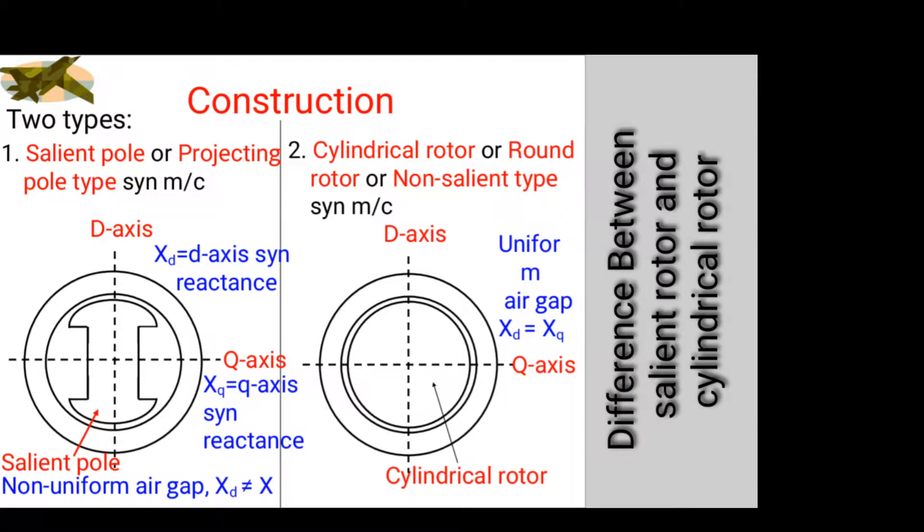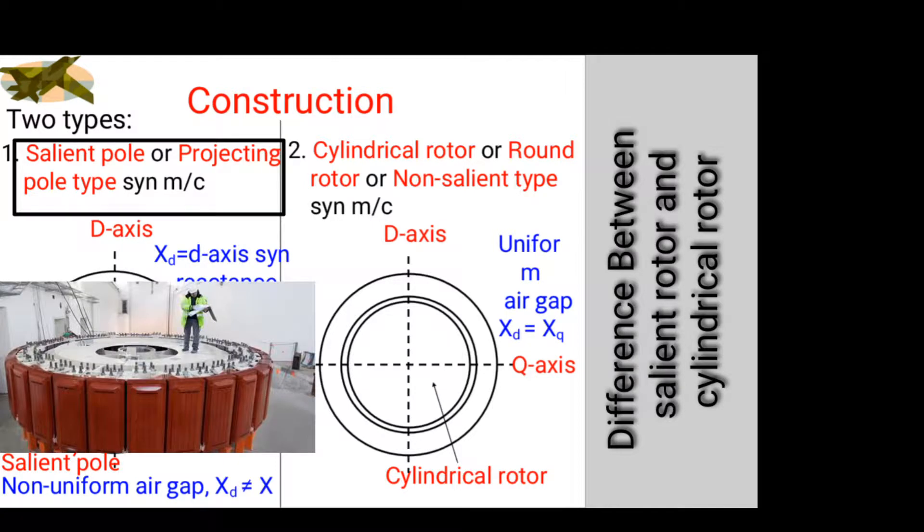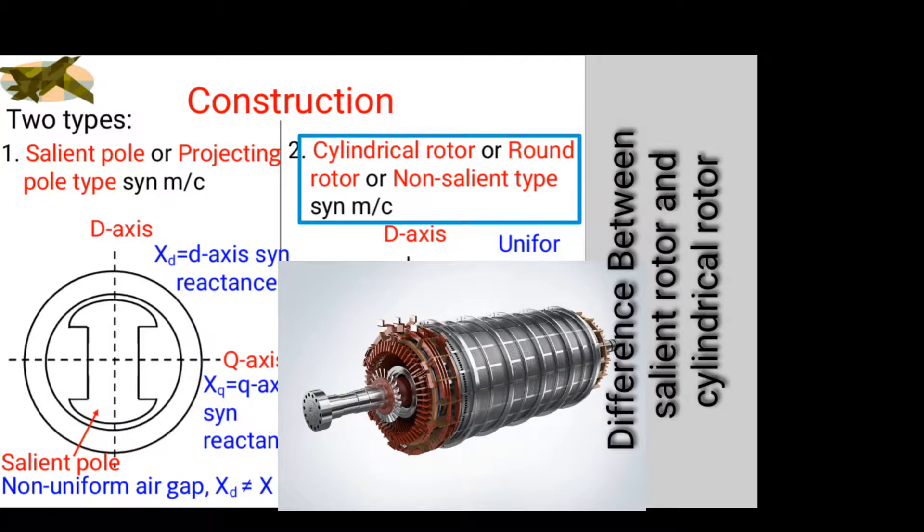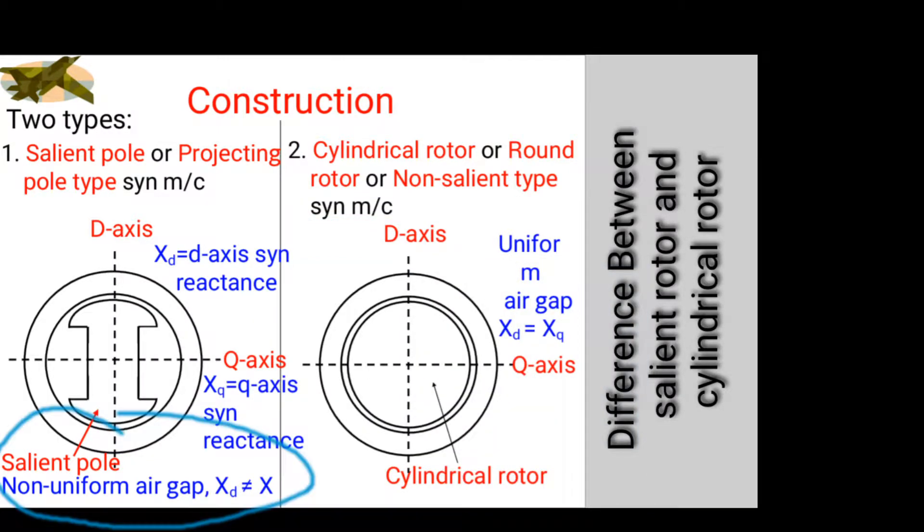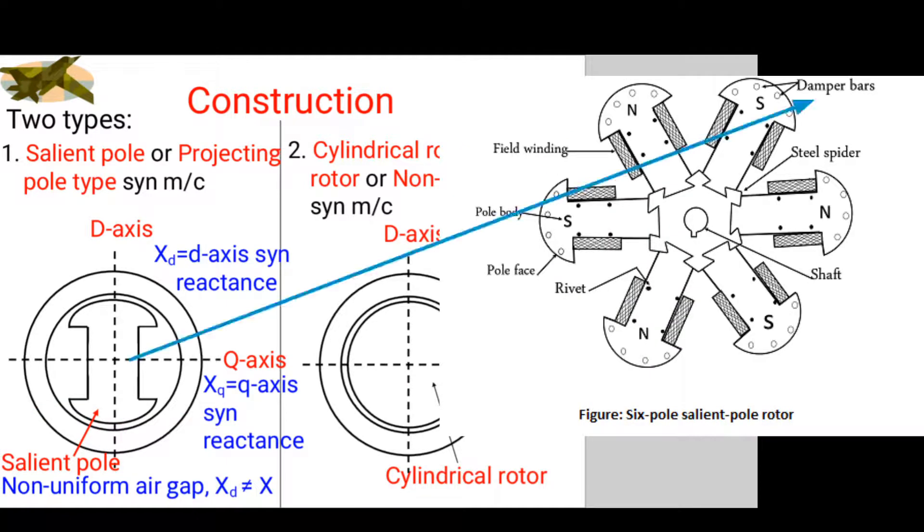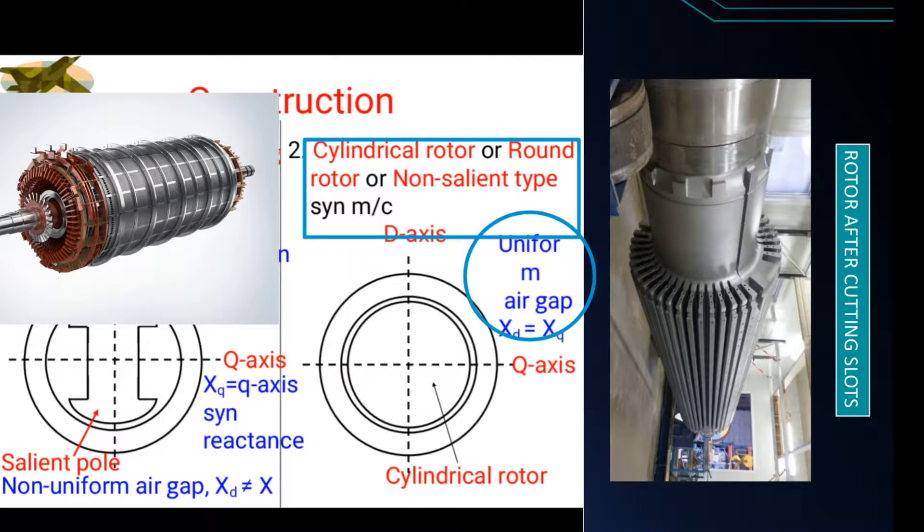Now, difference between salient rotor and cylindrical rotor. Salient is a projecting pole type, while cylindrical is cylinder form. In salient or projecting pole type, non-uniform air gaps or non-sinusoidal flux cutting is used with damper winding, while in non-salient it is uniform with smooth flux cutting.